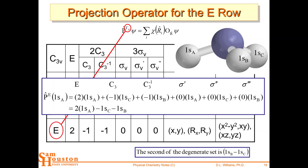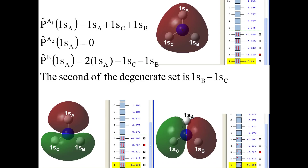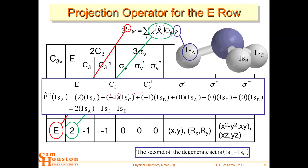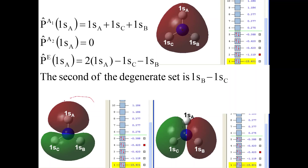For the E row: character under E is plus two, minus one under the rotations, and zero under the σv planes. The zeros eliminate those terms, and we end up with 2×1sA − 1sB − 1sC, giving one symmetry adapted combination. Because we used 1sA twice there, the complementary combination uses 1sA zero times and each of 1sB and 1sC once — that gives the other E combination, corresponding to the x and y directions respectively. We may pick this up and finish next time, then practice.